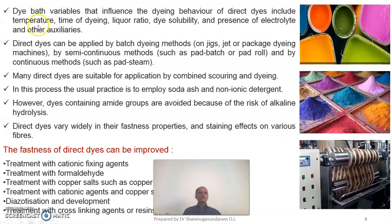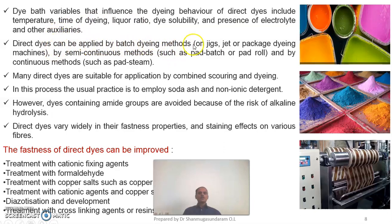The dye bath variables include dyeing temperature, dyeing time, liquor ratio, dye solubility, and the presence of an electrolyte and other auxiliaries — all of these are influencing factors during the dyeing process and should be carefully measured. Direct dyes can be applied in a batch process using a jigger machine, jet dyeing machine, or package dyeing machine; by a semi-continuous process such as pad-batch or pad-roll process; or by a continuous method such as pad-roll process.